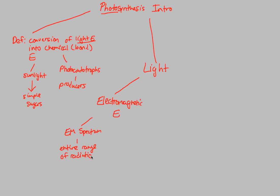You've probably seen the electromagnetic spectrum in physics class before. It includes radio waves, magnetic waves, microwaves, X-rays — all of those things are part of the EMS. Visible light is a small part of it as well, and that's what we're going to talk about in terms of photosynthesis, because that's the part that plants utilize.